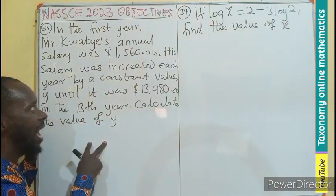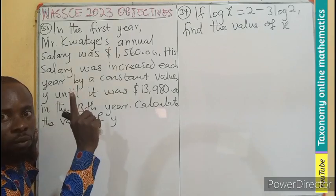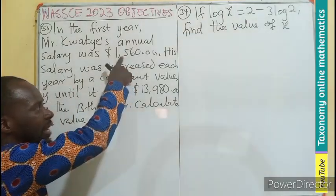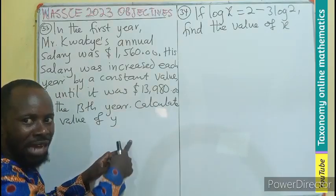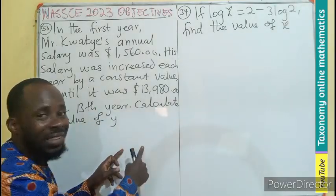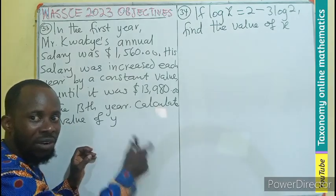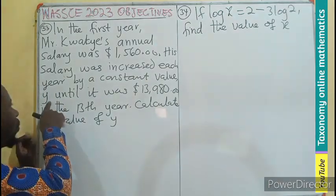It means that if I add y being 1, it is going to be $1,561. I will add 1 to that, $1,562. You see that the common difference will be 1, 1, 1, which will be your y.